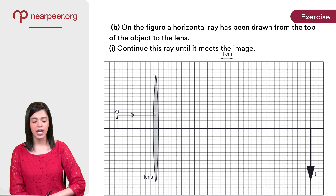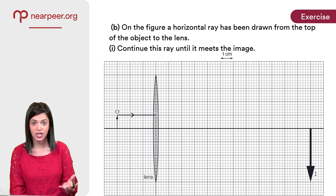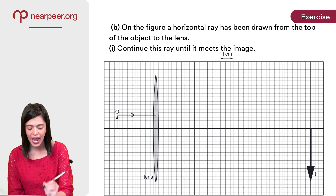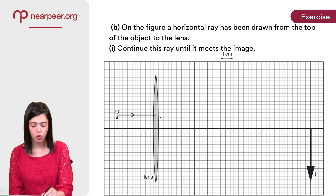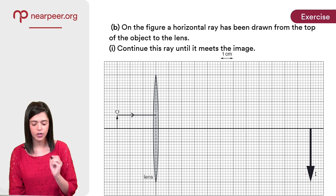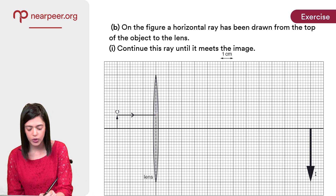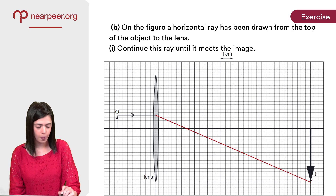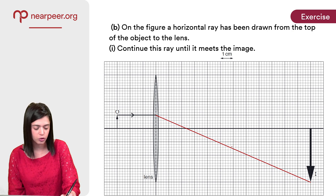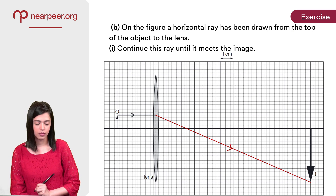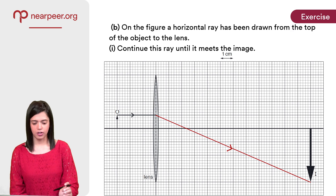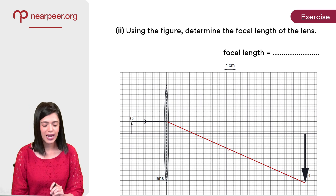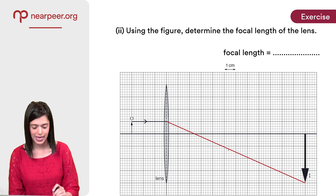A horizontal ray has been drawn from the top of the object to the lens; continue this ray until it meets the image. The path is incomplete — it is entering the lens but hasn't been shown to exit. All we have to do is connect where it passes through the lens to the tip of the image. Add an arrow and that is the complete path of the ray.